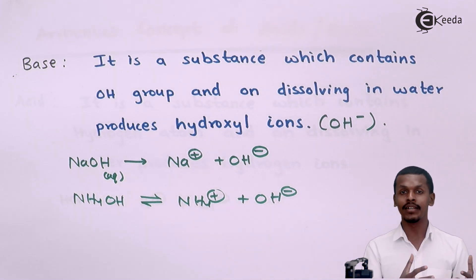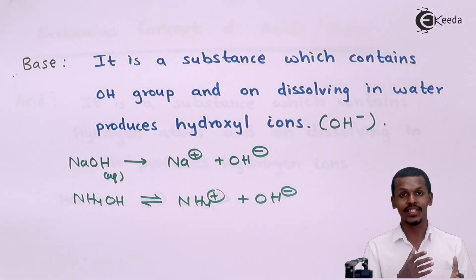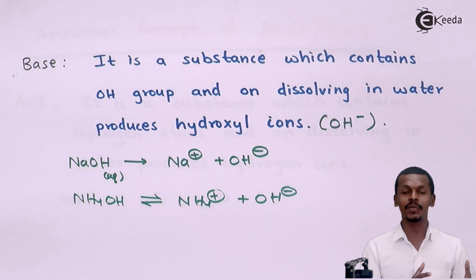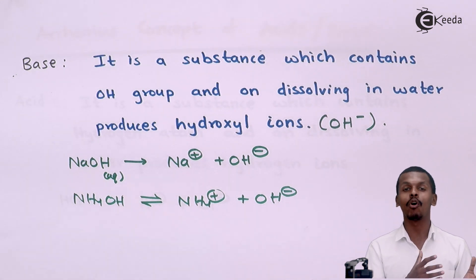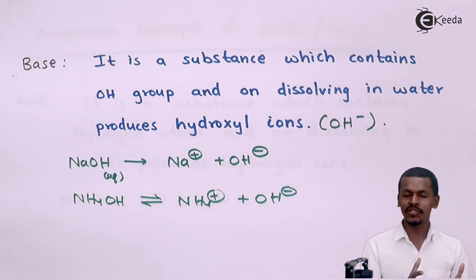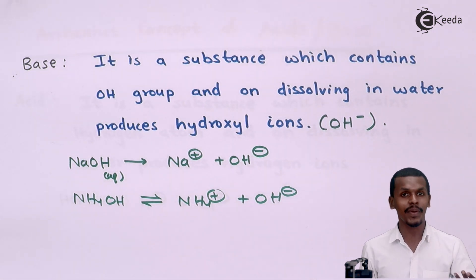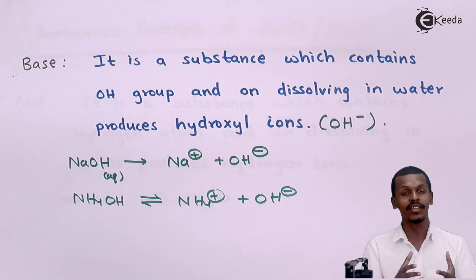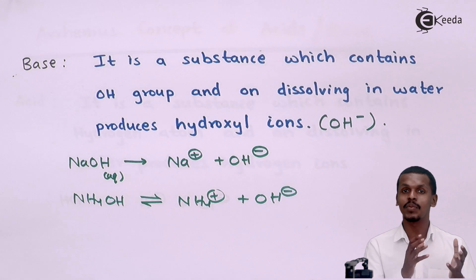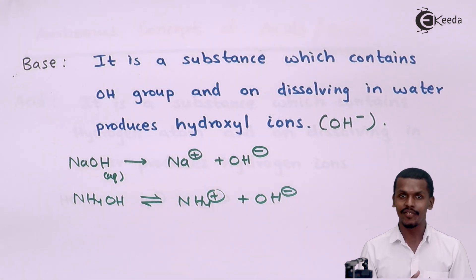Another limitation is that Arrhenius did not clarify how NH₃, which acts as a base, reacts with HCl, which is an acid, in the gaseous phase to form NH₄Cl — a neutralization reaction. Neutralization happens between an acid and a base, but since Arrhenius didn't classify NH₃ as a base, this reaction was not explained by him. These were the key limitations of the Arrhenius theory.